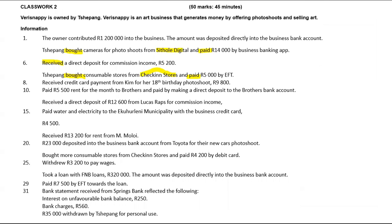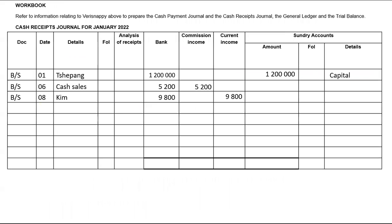We received a direct deposit — we are not paying, instead we are receiving a direct deposit from Lucas Reps for commission income. A direct deposit will be recorded in the CRJ. We'll have BS and the date will be the 10th; we received it from Lucas Reps and it goes under bank as well as commission income.